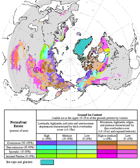The permafrost carbon cycle deals with the transfer of carbon from permafrost soils to terrestrial vegetation and microbes, to the atmosphere, back to vegetation, and finally back to permafrost soils through burial and sedimentation due to cryogenic processes. Some of this carbon is transferred to the ocean and other portions of the globe through the global carbon cycle.